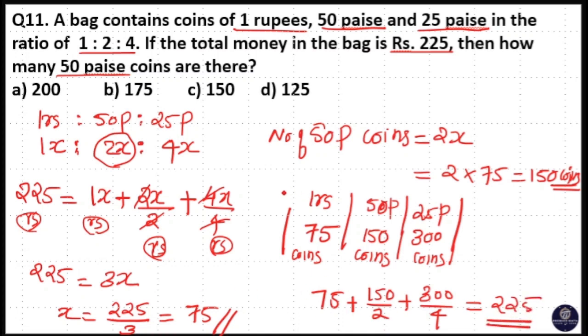So if you have any doubt, check this as reference. Our answer is 150 coins. So option C is your answer. Thank you.